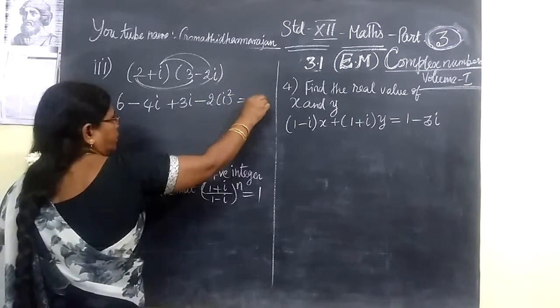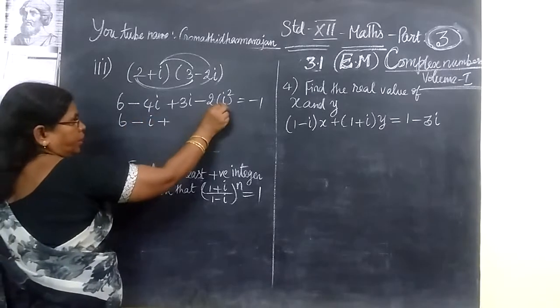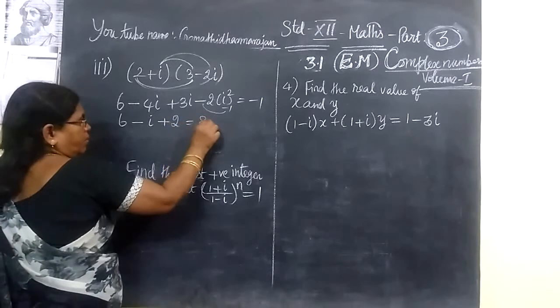i squared is nothing but minus 1. So it is minus i. It is minus 1. So minus minus plus. So 8 minus i.